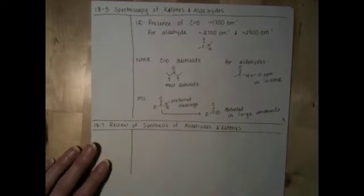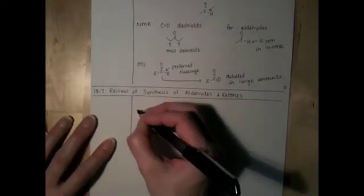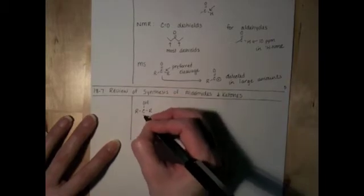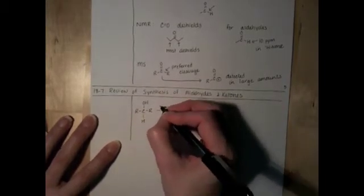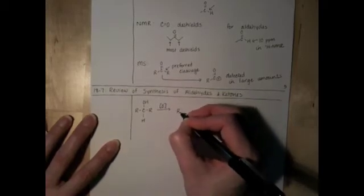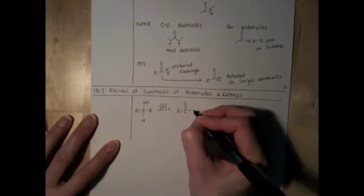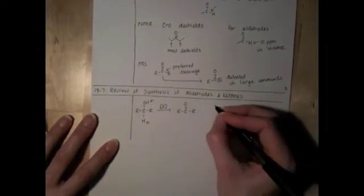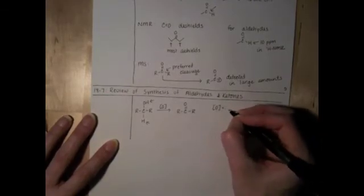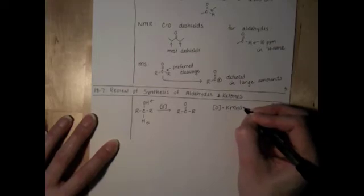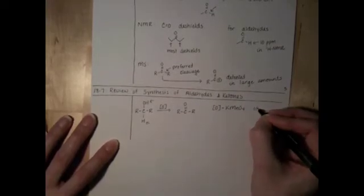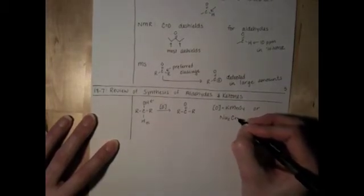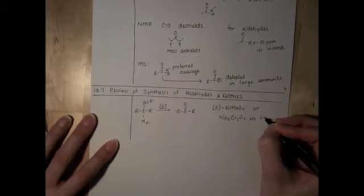One of the first reactions that we looked at was oxidation of a secondary alcohol. This reaction produces a ketone from the loss, ultimately, of those two hydrogens. And there are two oxidizing agents that we can use to do this reaction: potassium permanganate, which is definitely preferred over the carcinogen sodium dichromate and sulfuric acid.